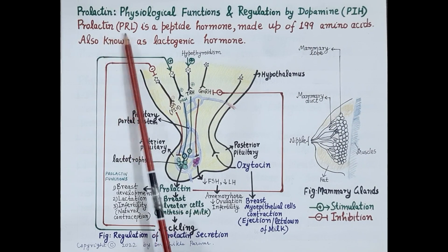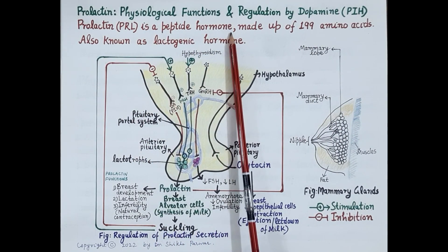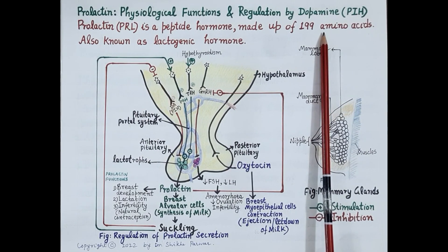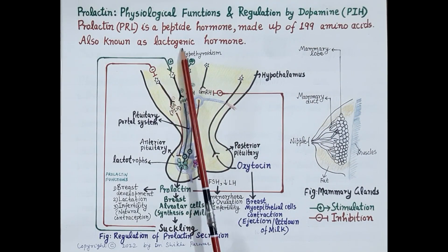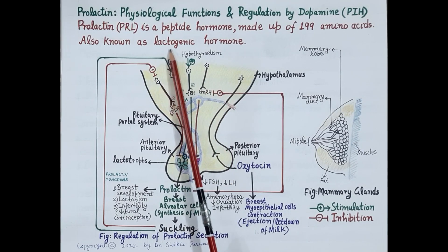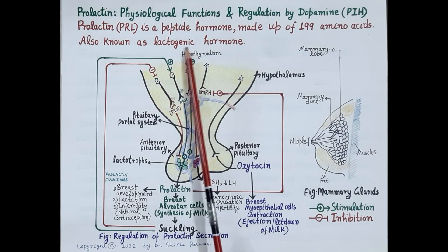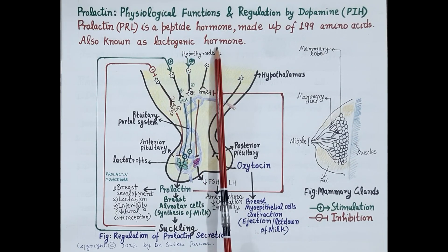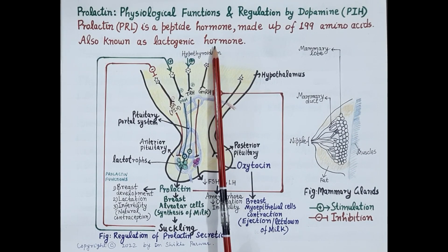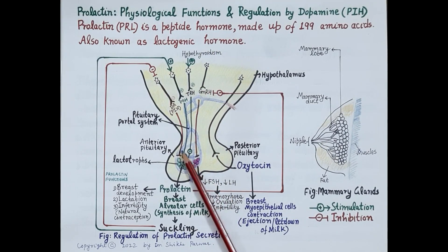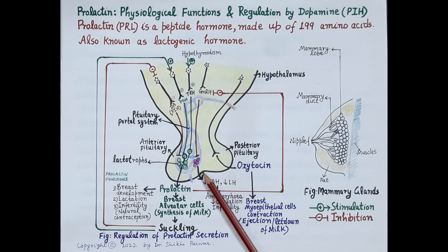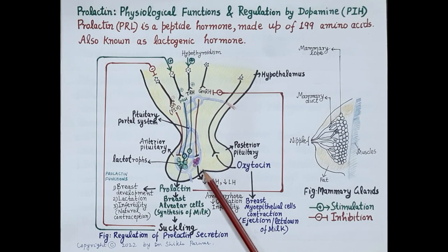Prolactin, in short PRL, is a peptide hormone made up of 199 amino acids. Prolactin is also known as lactogenic hormone. Lacto refers to milk, as milk consists of the carbohydrate known as lactose, and genesis means synthesis. So lactogenic hormone or prolactin is required for the synthesis of milk. Prolactin is a hormone synthesized and released into the blood by the anterior pituitary gland.